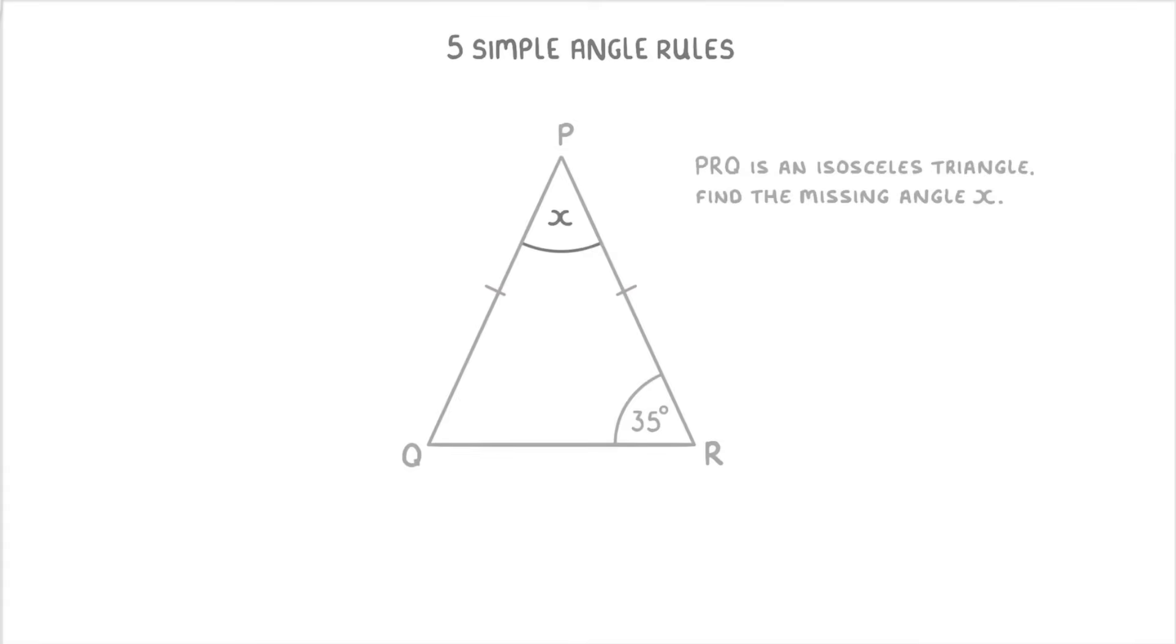Now if this was a normal triangle, then we wouldn't be able to do anything because we only have one angle out of three. But because this is an isosceles triangle, we know that this angle here is also 35 degrees. And so we now have two out of the three angles.